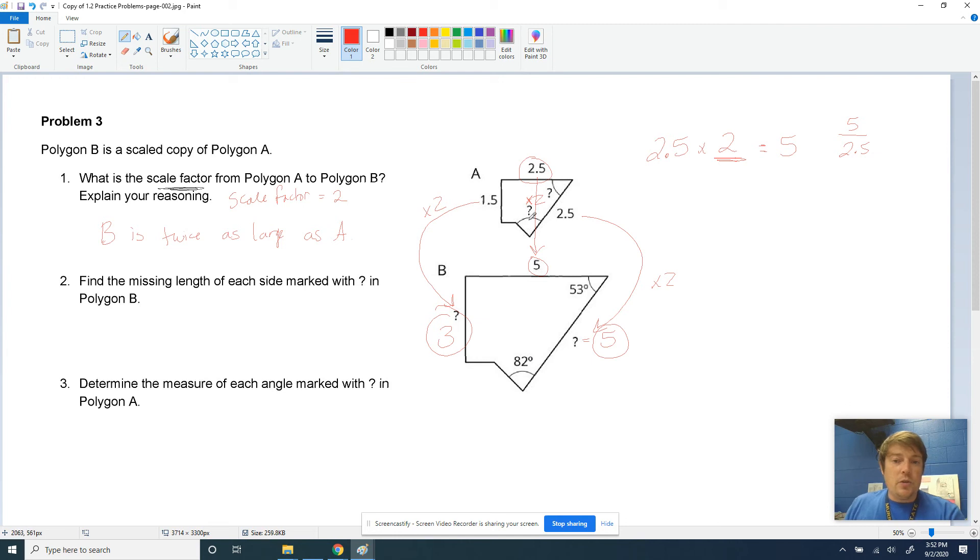But remember, these are question marks about angle sizes. And what we talked about on the last problem is that in scale copies, all of the angle sizes are actually the same. So this angle right here, it's 82 degrees. It didn't change. Just because it got bigger, it didn't change the angle length or size. And this one right here is the same as the one below. They're both 53 and 82 degrees. They did not change in the scale copies. And then it says, determine the measure of each angle marked with the question mark. That's what we did there. So we had 53 and 82 for those. And for these, we had the lengths for 3 and 5.